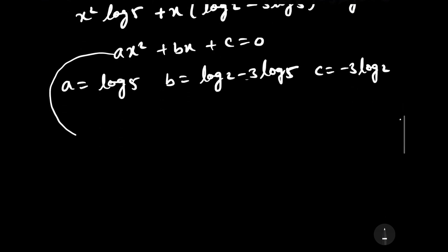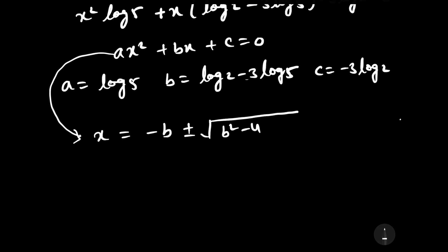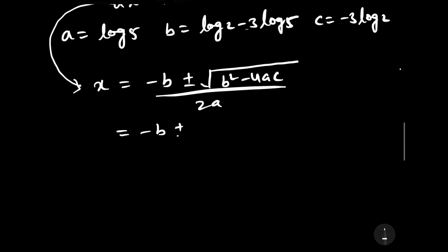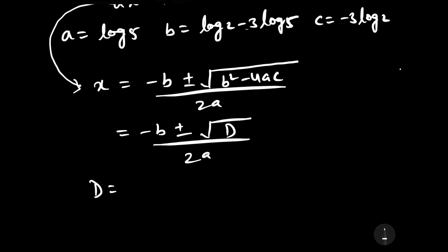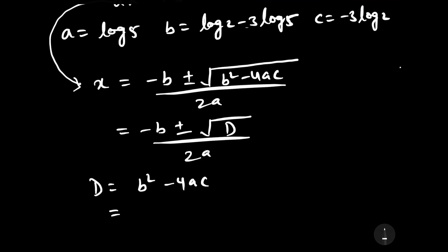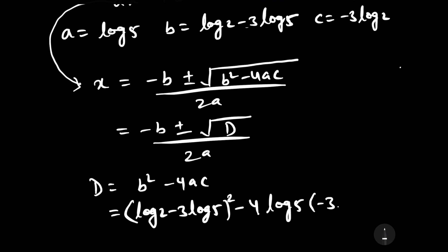We know that the roots of a quadratic equation are given by x equals minus b plus or minus the square root of (b squared minus 4ac), all over 2a, where the discriminant D equals b squared minus 4ac. Let us find the discriminant first. The value of b is log 2 minus 3 log 5, so b squared is (log 2 minus 3 log 5) squared, and we subtract 4 times log 5 times minus 3 log 2.